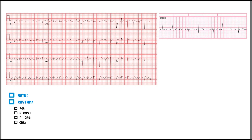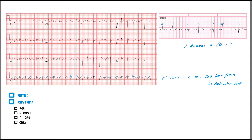Moving on to our next EKG. Let's determine the rate using the 10-second rhythm strip: 1, 2, 3, 4, 5, 6, 7, 8, 9, 10, 11, 12, 13, 14, 15, 16, 17, 19, 20, 21, 22, 23, 24, 25 — about 25 R waves. Multiply by 6, that's about 150 beats per minute. That's the ventricular rate. On another 6-second strip: 7 R waves times 10 gives 70 beats per minute.